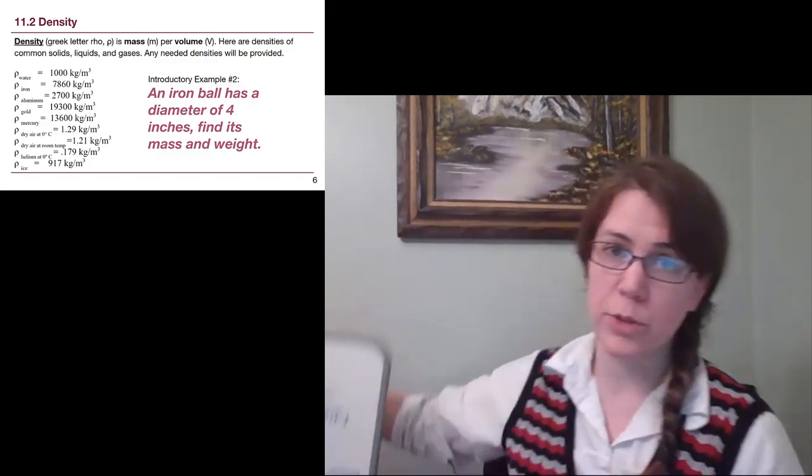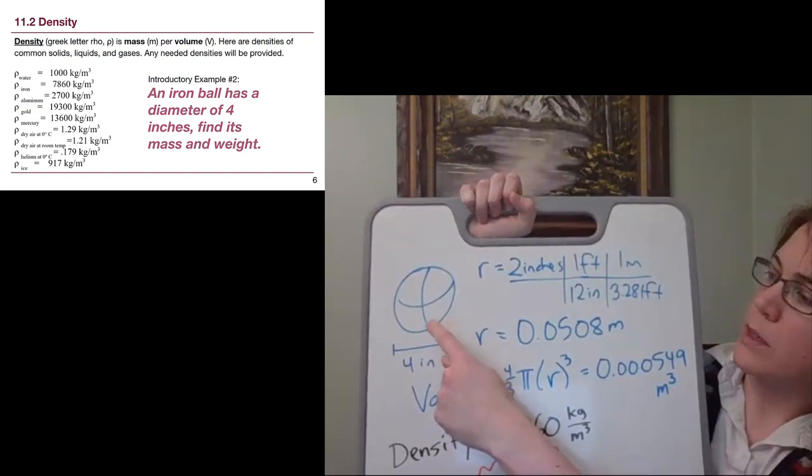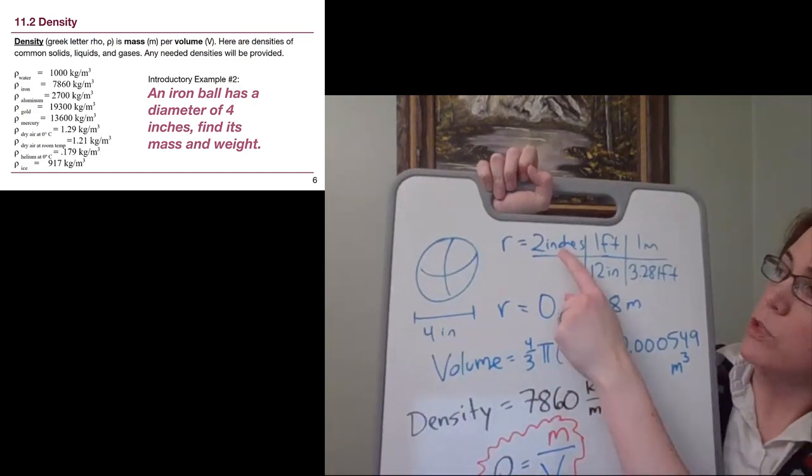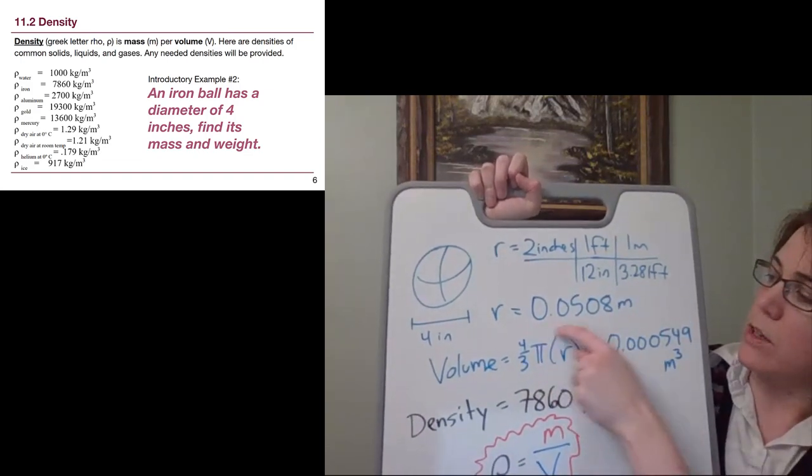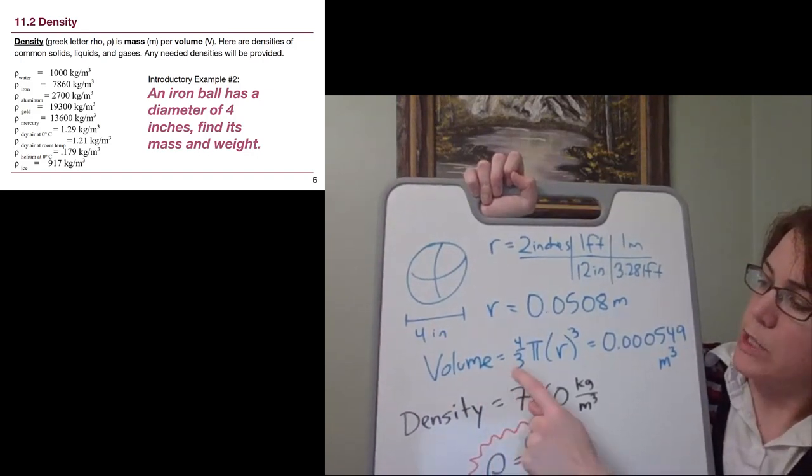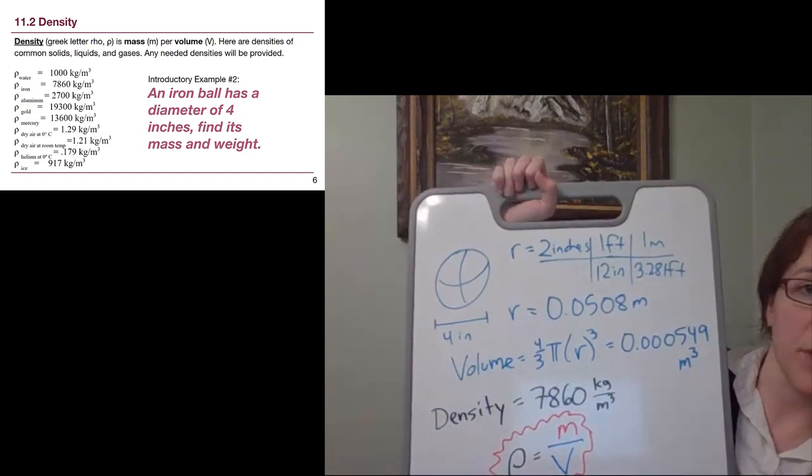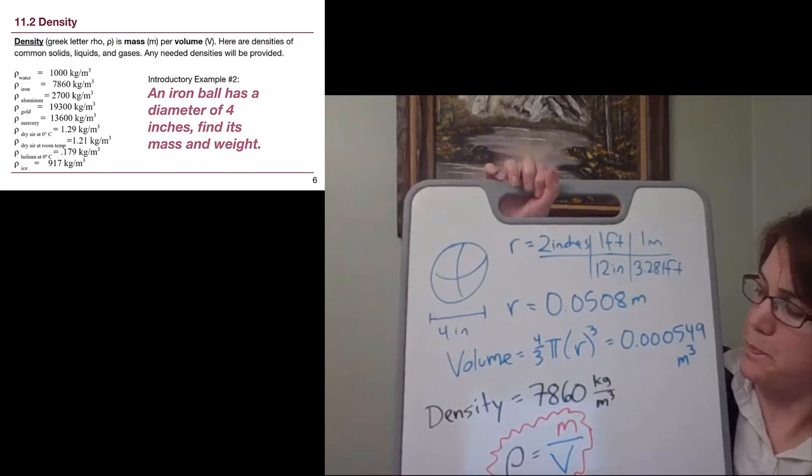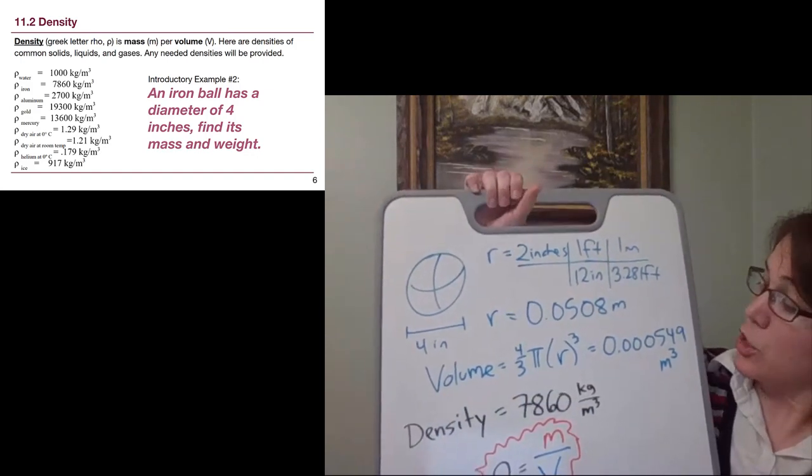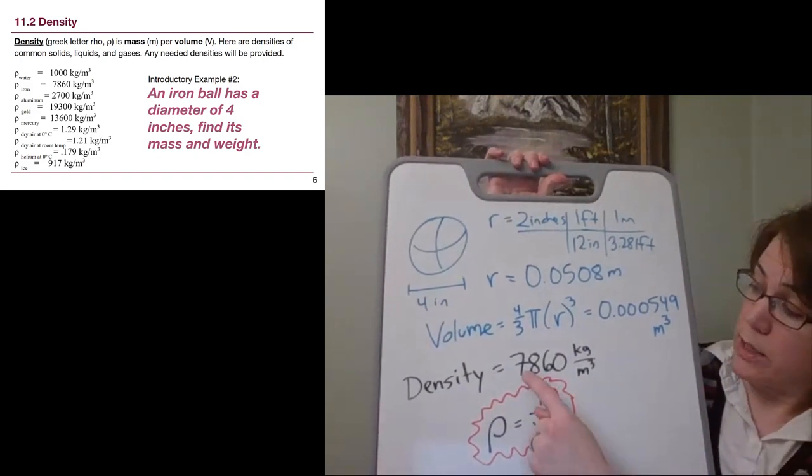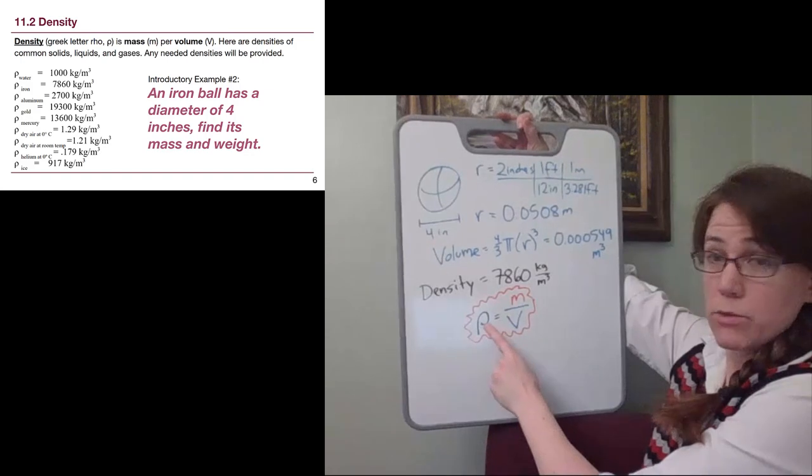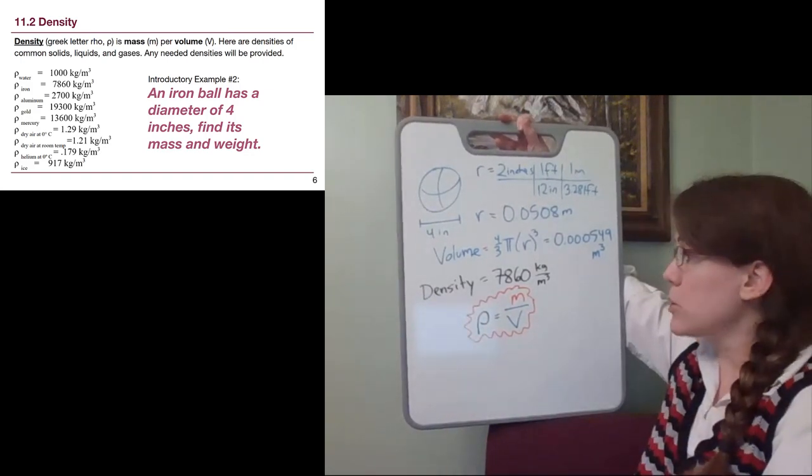So I've only started this one. We'll continue it as a group. The volume of a sphere, we first need to get the radius. We were given the diameter, four inches, which means the radius is two inches and we need to convert the units. So in meters, the radius is 0.0508 meters. The volume is 4 thirds times pi times r cubed. When we plug in that radius, we will get a volume of 0.000549 cubic meters.